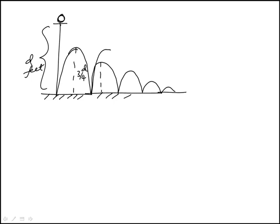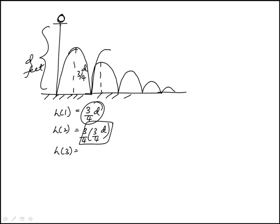The question is which of the following is an expression for h of n? So the first bounce is three-quarters d. The second bounce would be three-quarters of that, three-quarters of three-quarters of d.